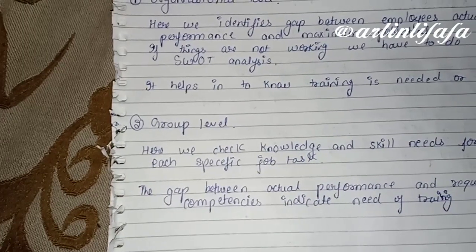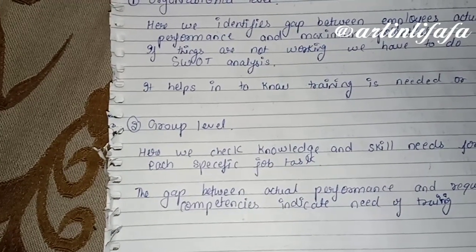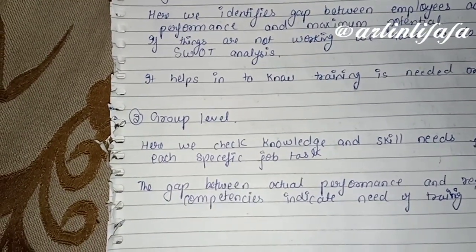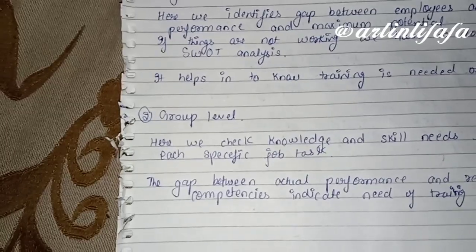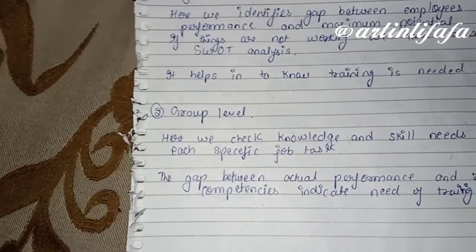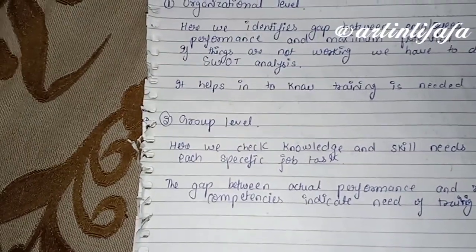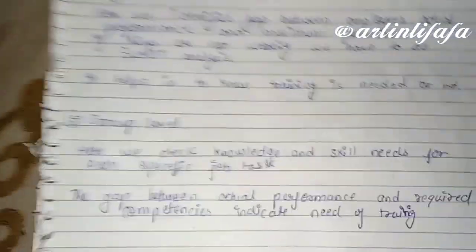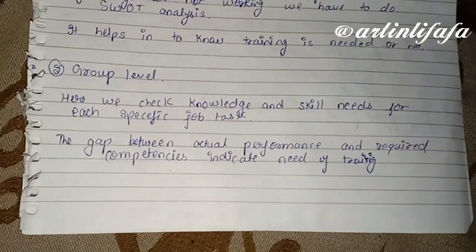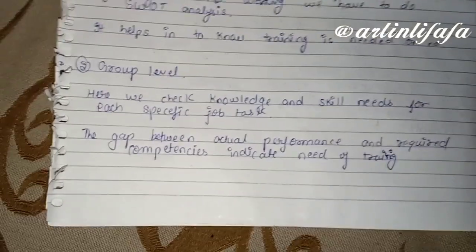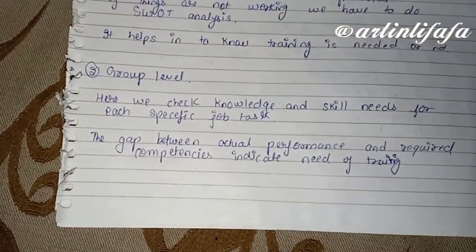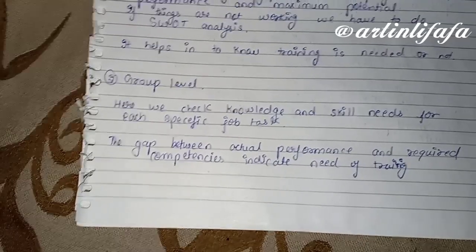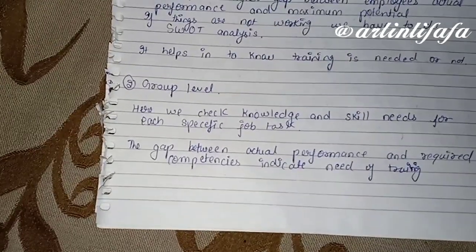We need to have a strategy. At the group level, we check knowledge and skill needs for each specific job task — कि जो teams बना देते हैं organizations के अंदर, तो particular job के लिए बंदों के पास skills और knowledge है या नहीं।